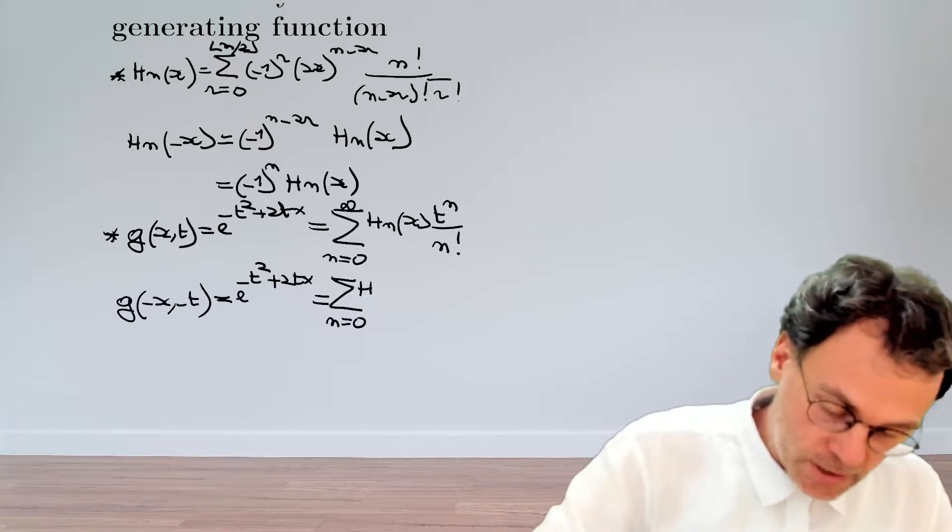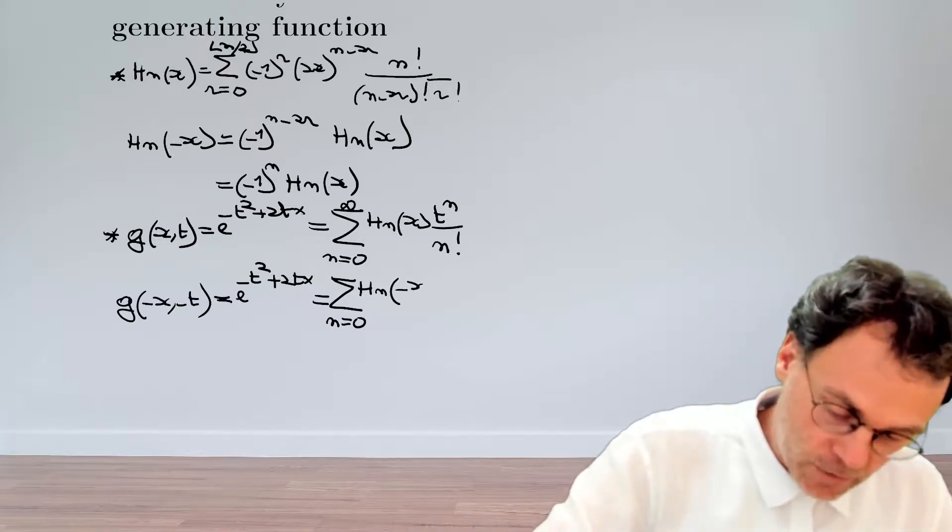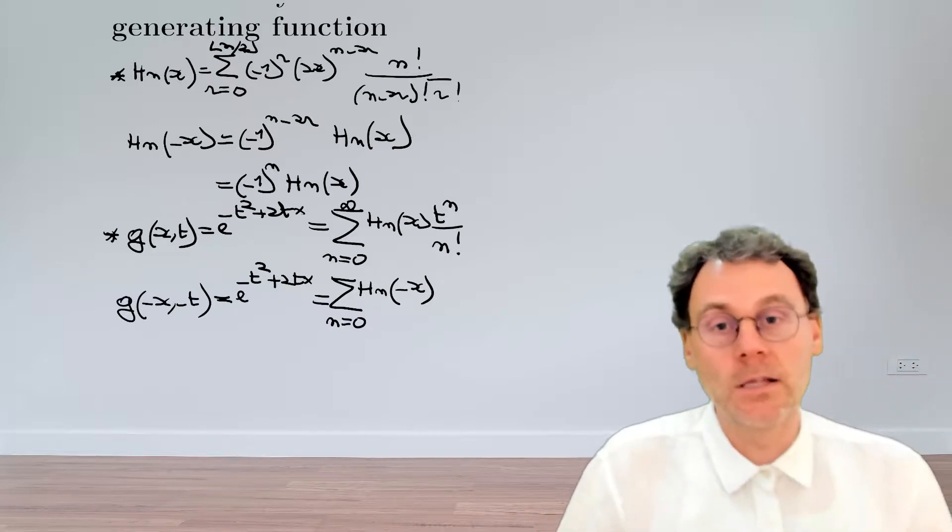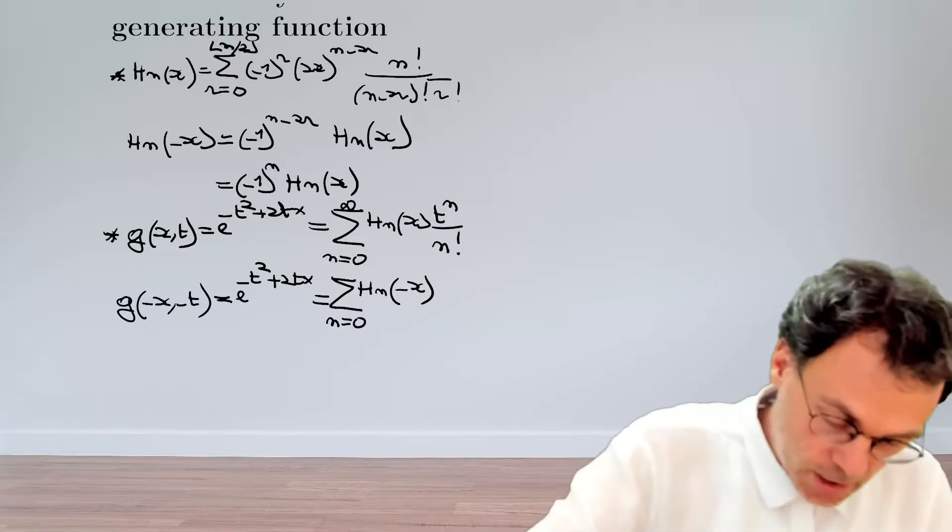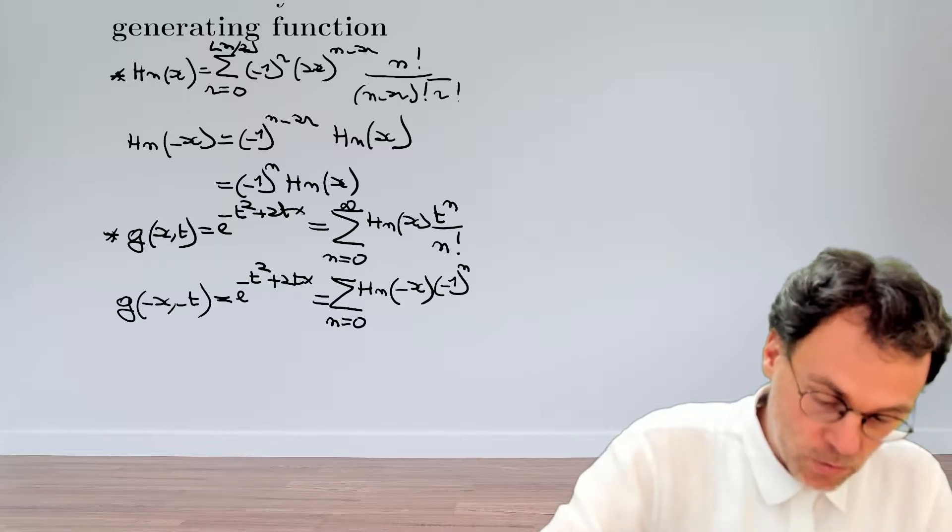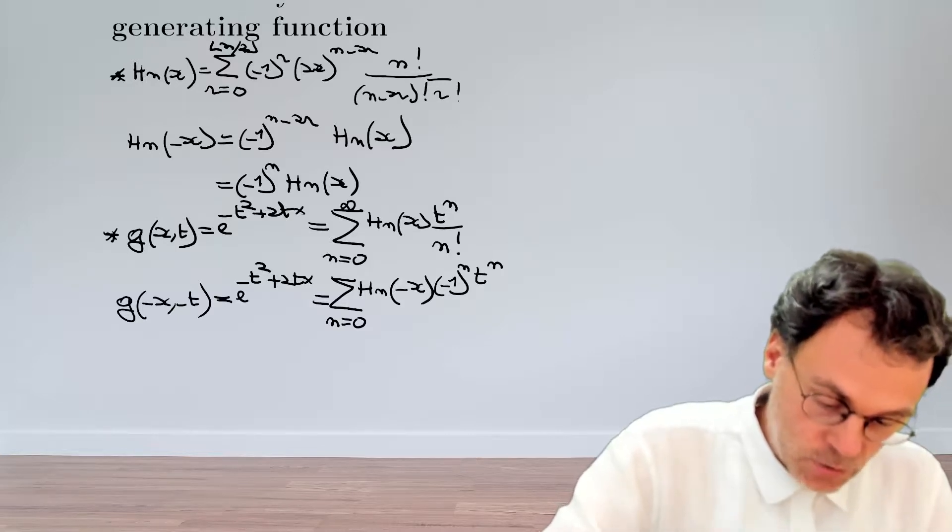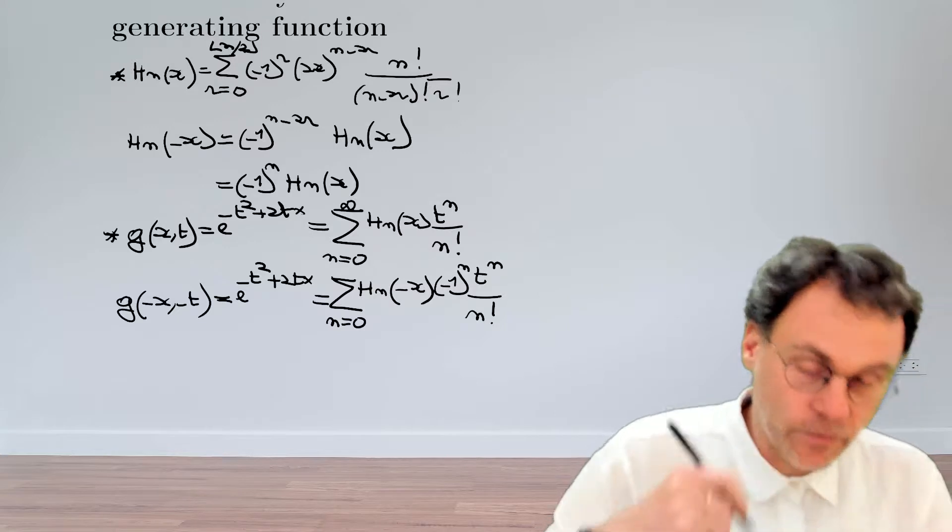So if we replace x by minus x, we get the following. And then replacing t by minus t, we pick up an extra factor minus 1 to the power of n, t to the power of n over n factorial.